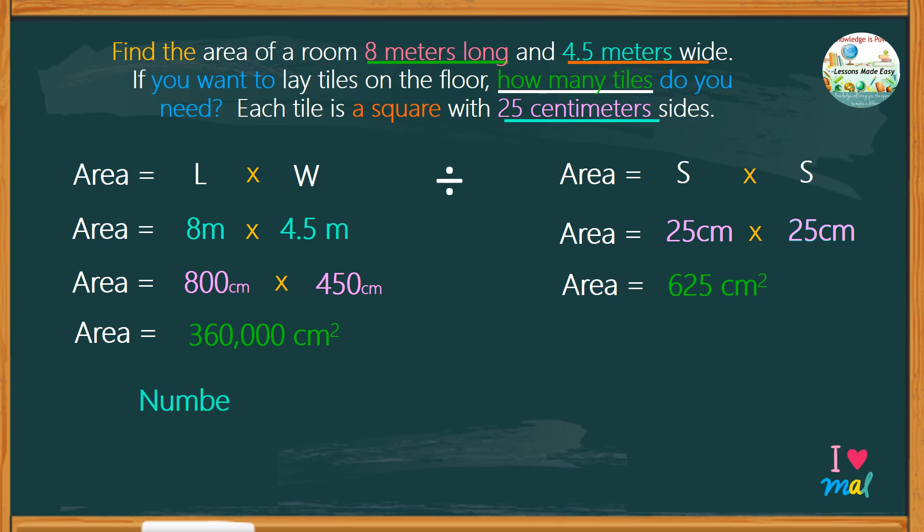To find the number of tiles, we must then divide 360,000 square centimeters by 625 square centimeters. In division, we cancel the units that are the same. So, the remaining number will give us a quotient of 576, which is the number of tiles.